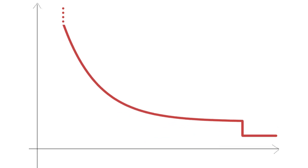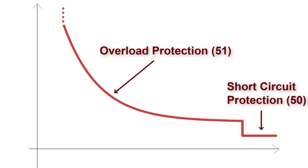Note that in ANSI code, we use the number 50 as a representation for short-circuit protection, and the number 51 as a representation for overload protection.